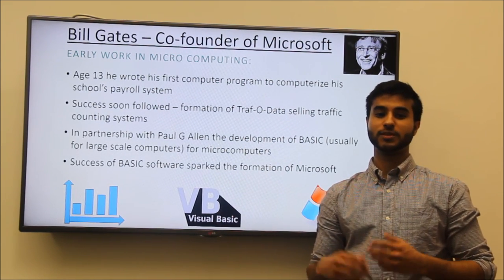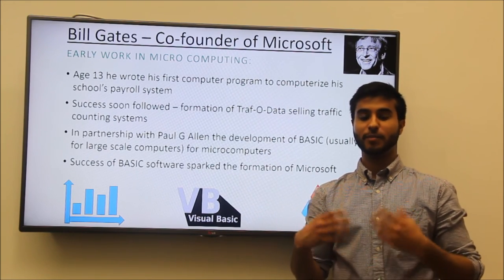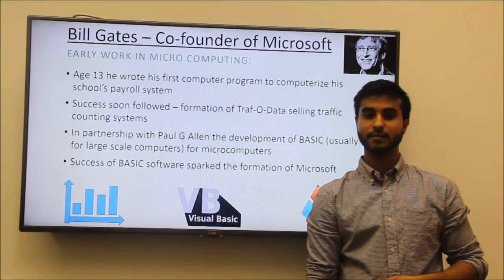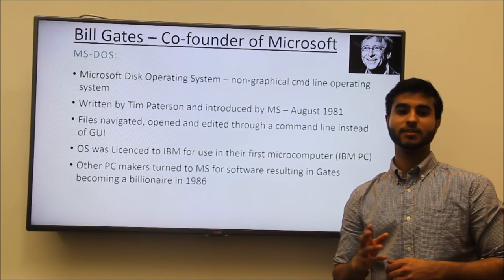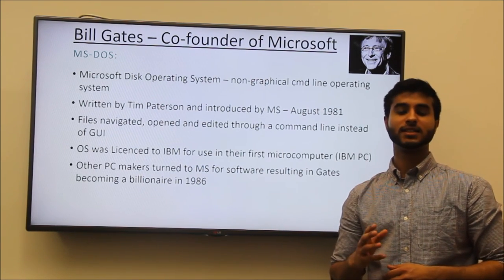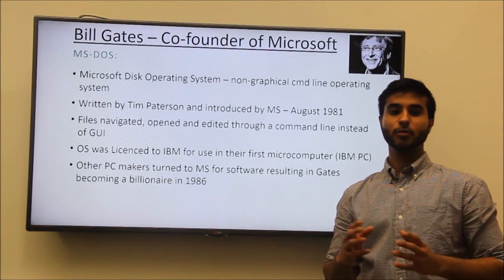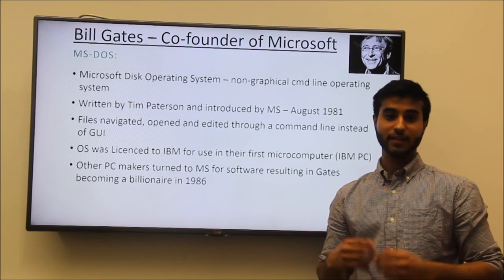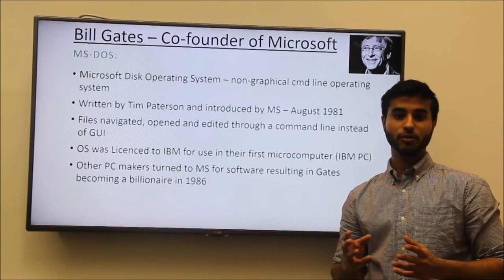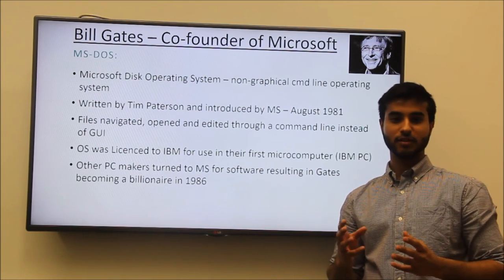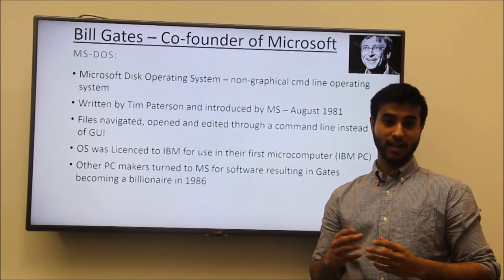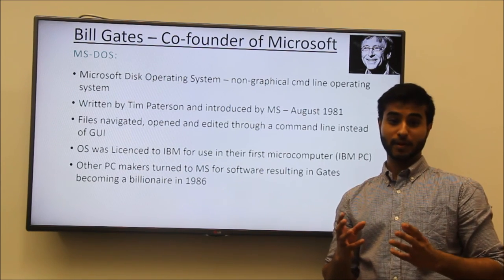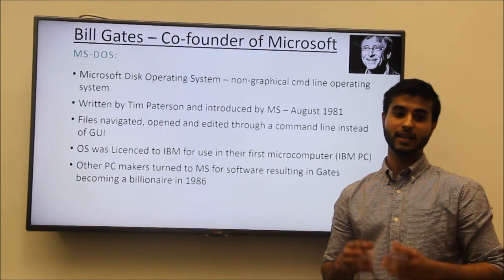The initial concept behind Microsoft was to develop the popular large-scale computing language called BASIC for microcomputers. This operating system was then used in IBM's first computer called the IBM PC. MS-DOS is the first iteration of the Windows OS system, written by Tim Patterson in August 1981. The operating system provided users with a command line navigation system, which was a huge step in computing at the time. IBM agreed to pay Microsoft a total of $430,000, and the deal with IBM turned other PC makers to Microsoft technologies, resulting in Gates becoming a billionaire in 1986.